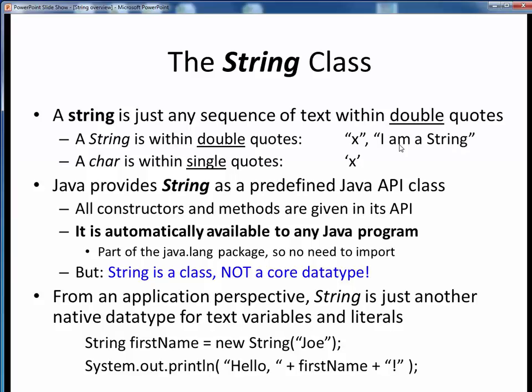Contrast that with an individual char, which is one character enclosed within single quotes. For example, this X is a string because it's inside double quotes, but this X is a char because it's within single quotes. There is a big difference between these in Java.